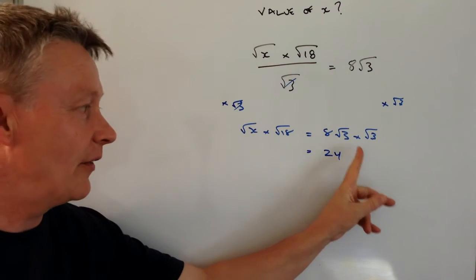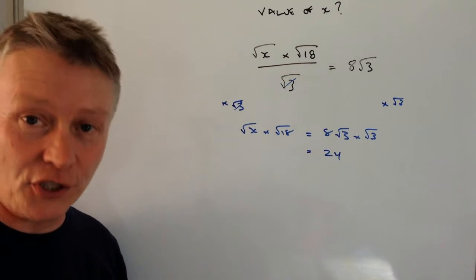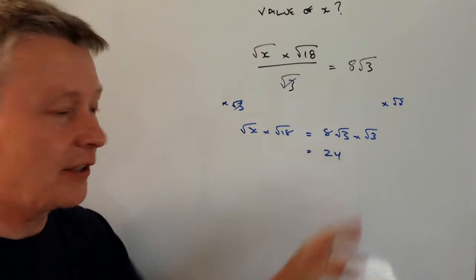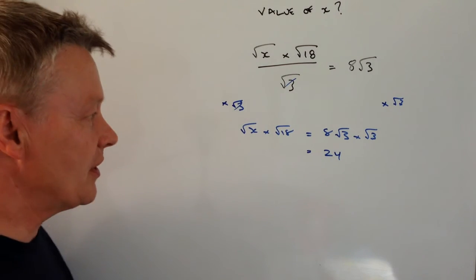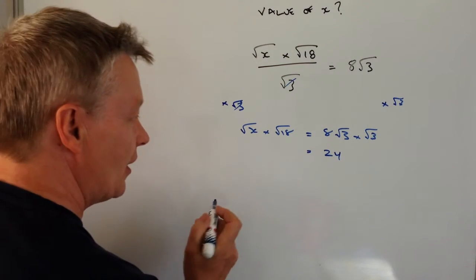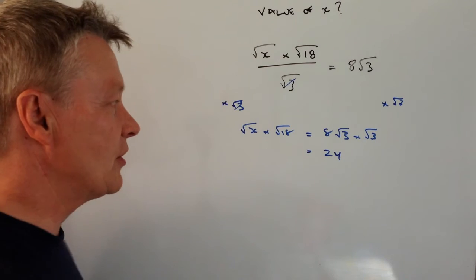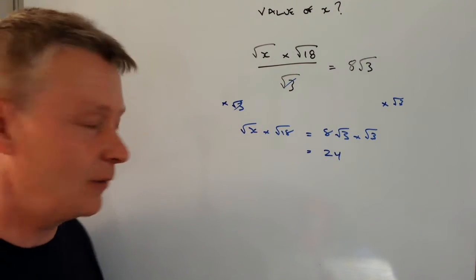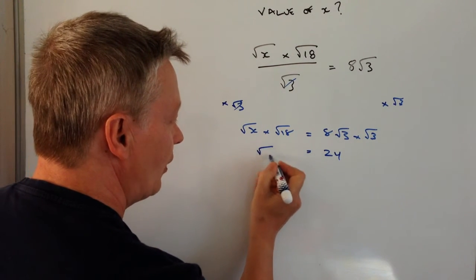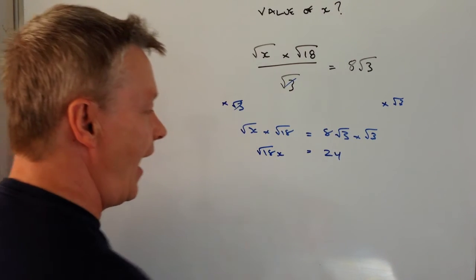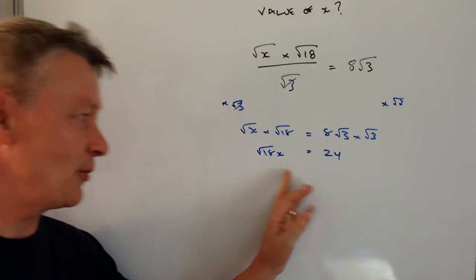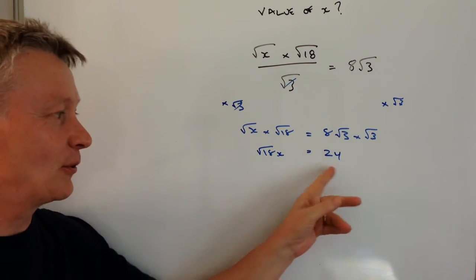If you're not too sure about that maybe have a look at some of the other thirds questions and that will give you some idea of how to work the right hand side. On the left hand side here I've got basically root x times root 18. Well it's just as easy for me to write root 18x. So I've got this situation where root 18x equals 24.